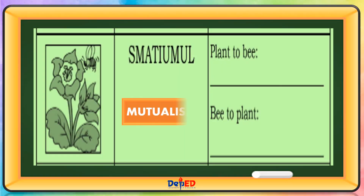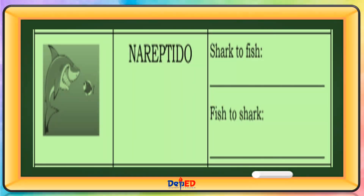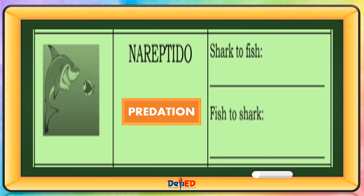Mutualism: Plant to bee — Benefited. Bee to plant — Benefited. Predation: Shark to fish — Benefited. Fish to shark — Harmed.